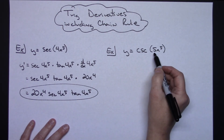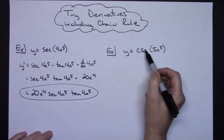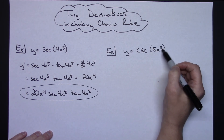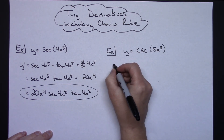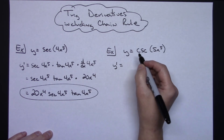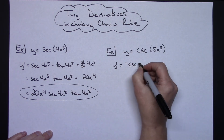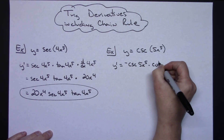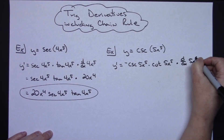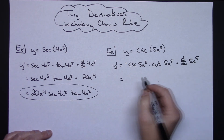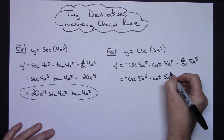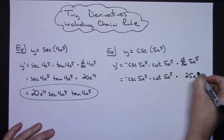Second example: y equals cosecant of 5x to the fifth. I've got to have the derivative of cosecant memorized, which is negative cosecant cotangent, and I have to recognize this will include a chain because 5x to the fifth is the inside function. So y prime — taking the derivative of cosecant leaving the inside alone — is negative cosecant(5x⁵) times cotangent(5x⁵), times the derivative of the inside function, which is that 5x to the fifth.